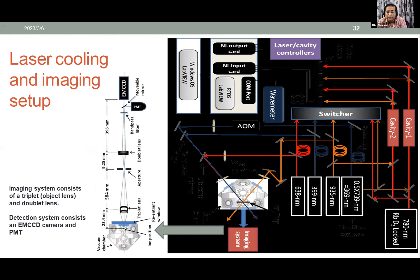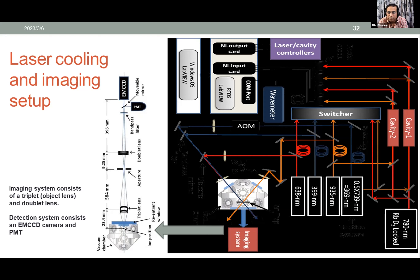This is the experimental laser cooling system. Multiple laser beams pass through the surface trap or macroscopic ion trap. We have a 638 nm laser, 399 nm, 935 nm, and a frequency-doubler system producing 369 nm light. All these beams come from different fibers, lenses, AOMs, and EOMs — this is the full experimental setup on the optical table.